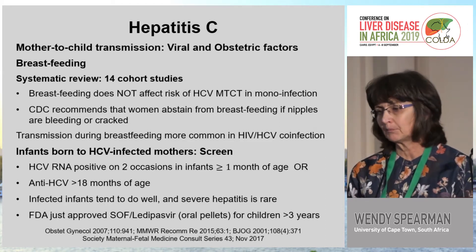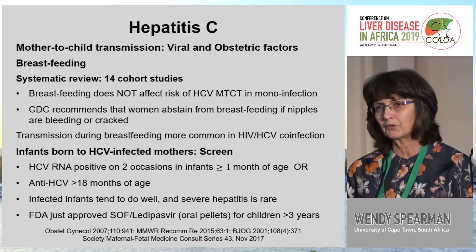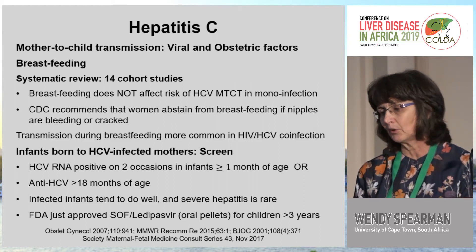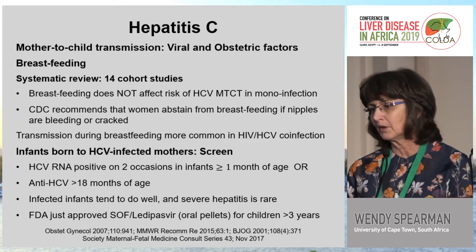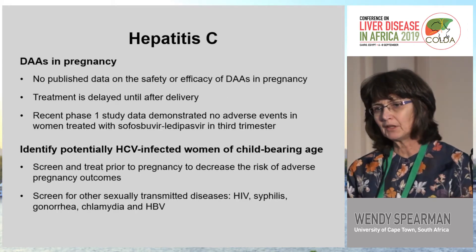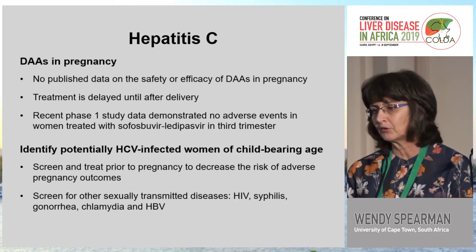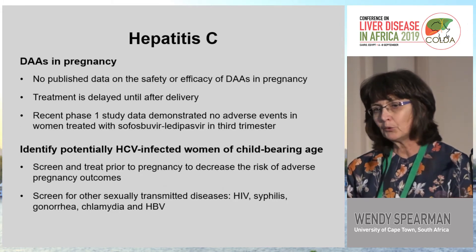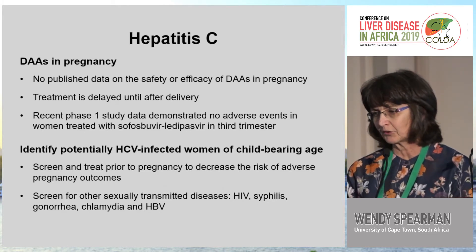All infants born to hepatitis C-positive mothers should be screened. They are considered infected if RNA is positive on two occasions when the infant is more than one month old. Antibody testing should be done after 18 months to avoid reflecting maternal antibody. Infected infants tend to do well and severe hepatitis is rare. The FDA has approved sofosbuvir in oral pellet form for children over age three for genotypes 1, 4, 5, and 6. Regarding DAAs in pregnancy, there is no published safety or efficacy data, and treatment is usually delayed until after delivery unless in a trial setting. Recent phase one data suggests no adverse events with sofosbuvir in the third trimester. Women of childbearing age should be identified, treated prior to pregnancy, and screened for other sexually transmitted infections.